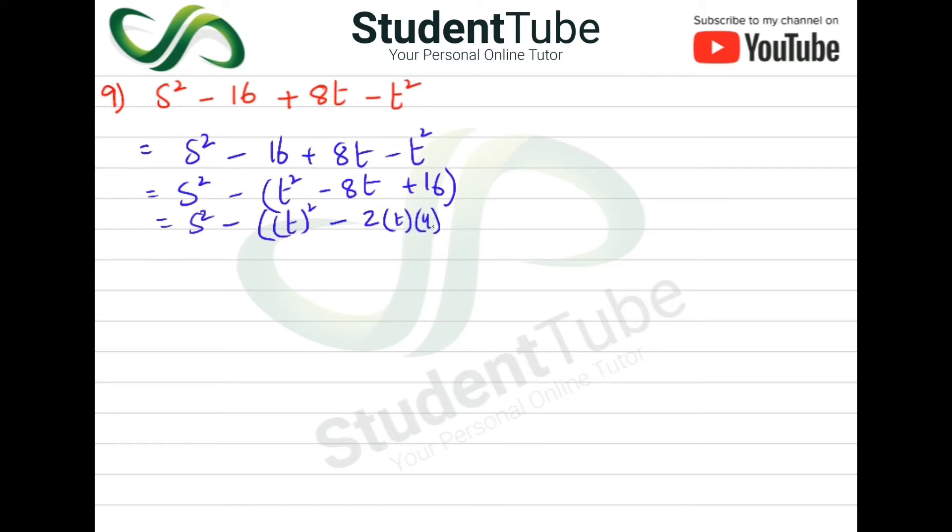That is, two fours are eight, and t is with this plus 16. So we give it here 4 square. So now when we have small brackets, then there will come in the middle of the bracket.